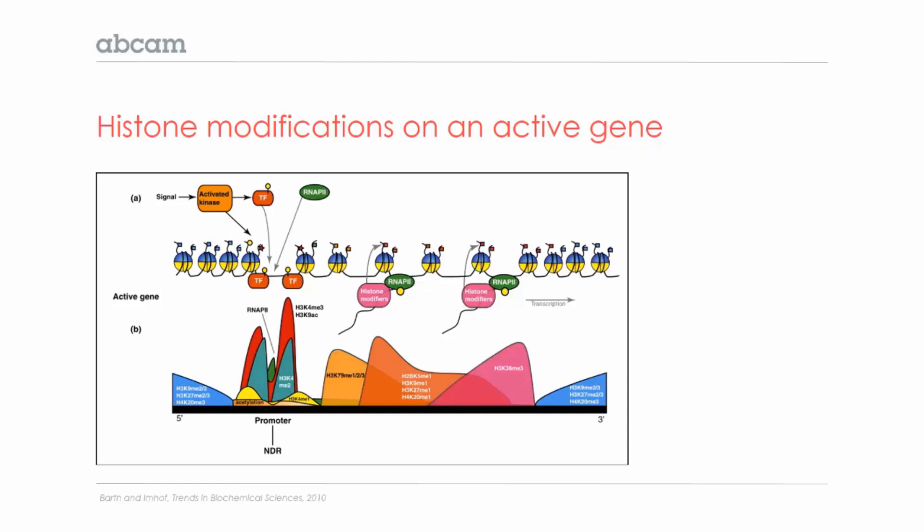When transcription is happening, histone modifiers introduce activating histone modifications as the polymerase travels along the DNA. The promoter region has a very well-defined chromatin signature. There's a clear nucleosome-depleted region where the polymerase binds, and large increases in activating H3K4-trimethylation and acetylation.